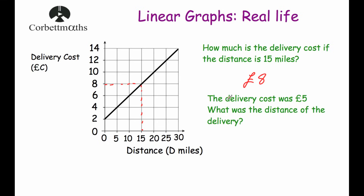The next question says the delivery cost was £5 — what was the distance? Going to £5 on the vertical axis, which is between 4 and 6, we go across and then down. We land in the middle of 5 and 10 miles. The midpoint of 5 and 10 is 7.5, so the distance is 7.5 miles.